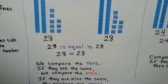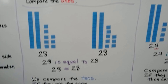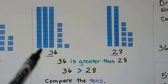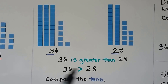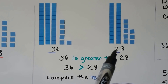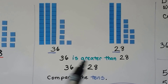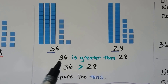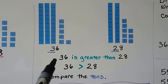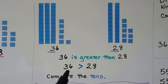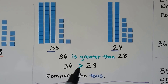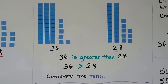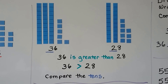Here we have three tens and here we have two tens — we have 36 and 28. Three tens is more than two tens, so 36 is greater than 28. We can write 36 is greater than 28. We compared the tens to find the greater number.